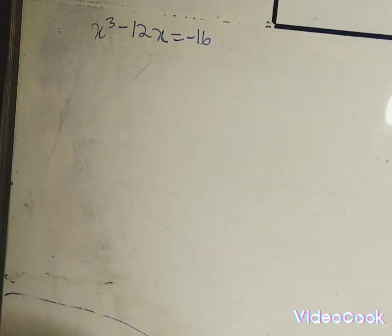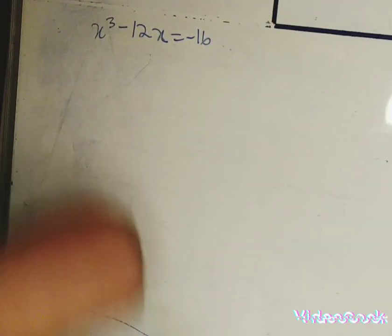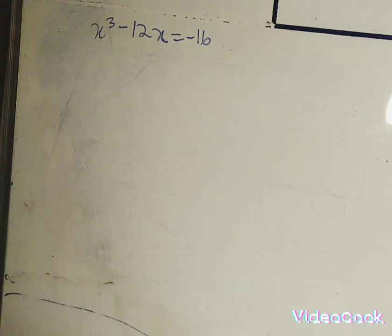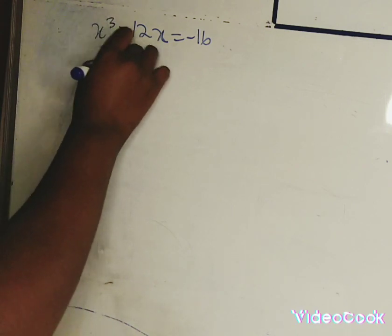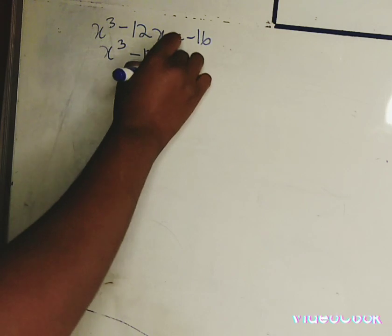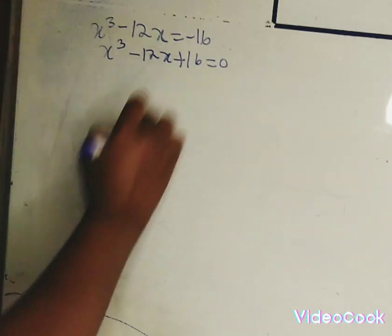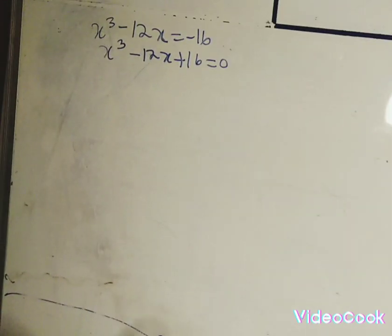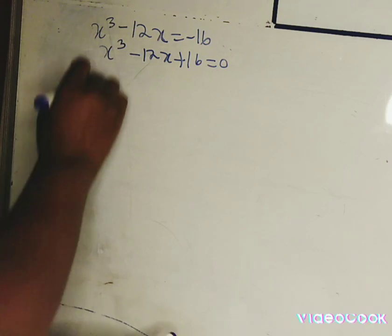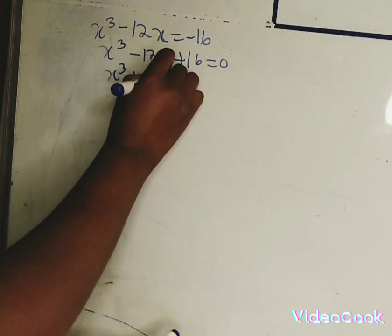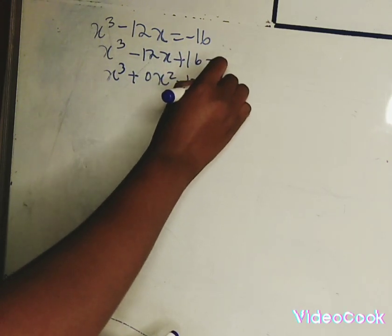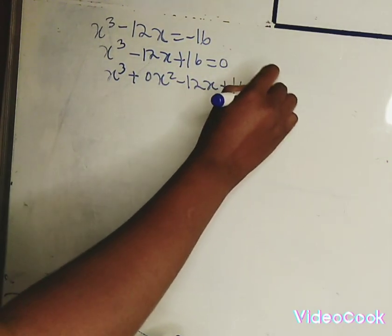Hi guys, welcome to Memo's Tutorials. Today we are solving cubic equations. Let's rewrite the equation: x cubed minus 12x plus 16 equals 0. Since we don't have an x squared term, I prefer to write it as x cubed plus 0x squared minus 12x plus 16 equals 0.